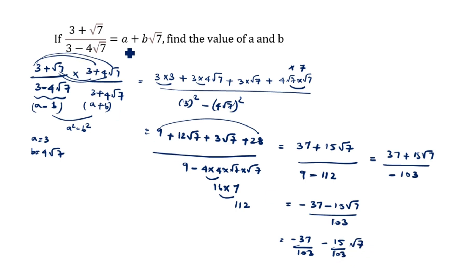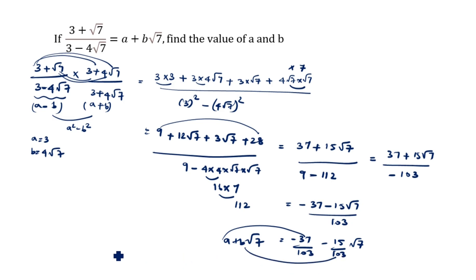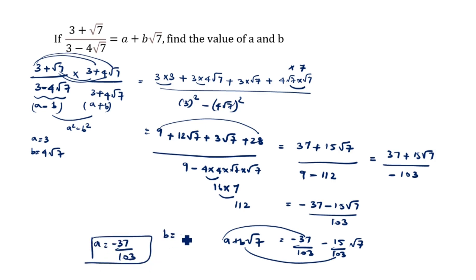Comparing with A plus B root 7, we can identify: A is equal to minus 37 by 103, and B is equal to minus 15 by 103. This is the answer. Thanks for watching this video.